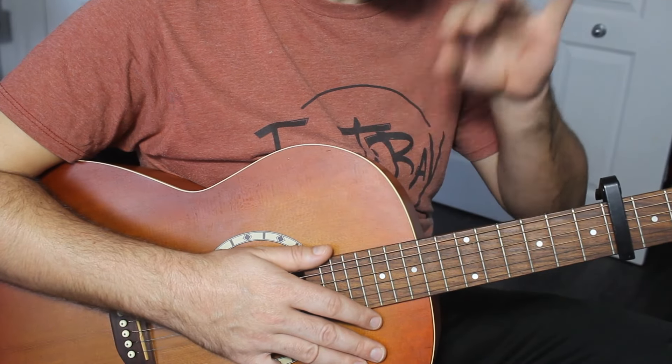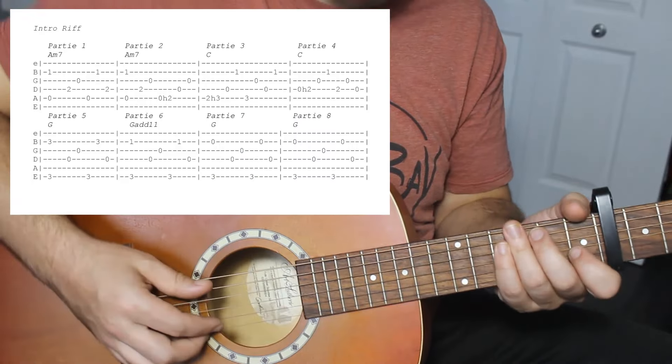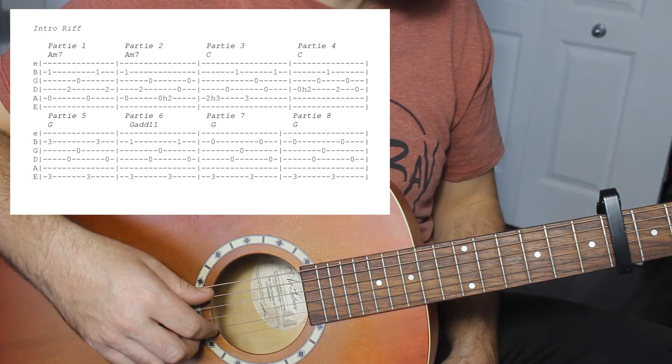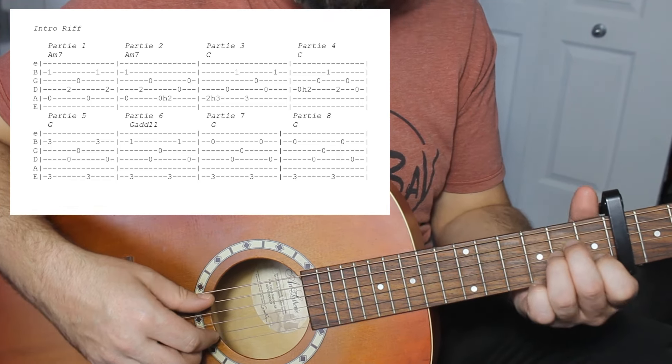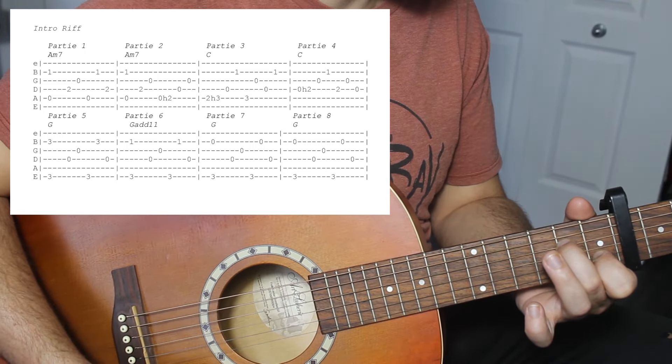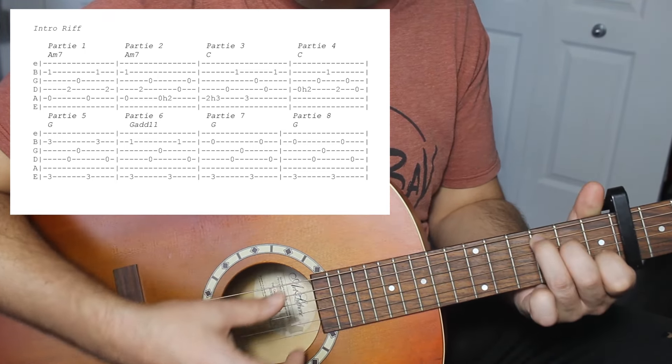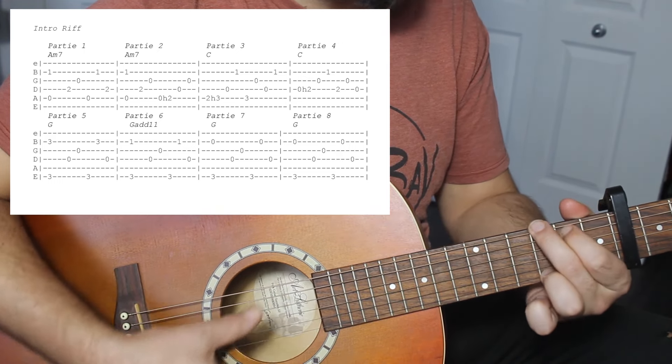On va y aller par étapes. Dans le riff, vous pouvez voir qu'il y a huit parties. On va les décortiquer ensemble. Capo 6. Am 7e. C'est quoi un Am? On s'installe sur le Am. On enlève le troisième doigt. Puis, ensuite, on peut faire le C. Et on finit sur le G.